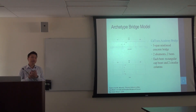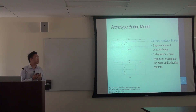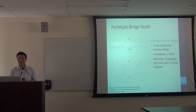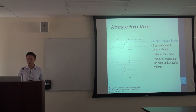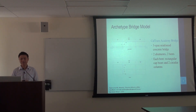For illustration, we've used an archetype bridge model based on the Caltrans Academy Bridge, which is a three-span reinforced concrete bridge with two abutments and two bents, and each bent consists of a rectangular cap beam and two circular columns.